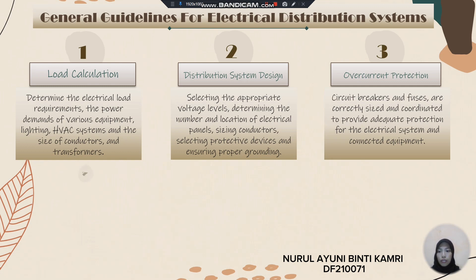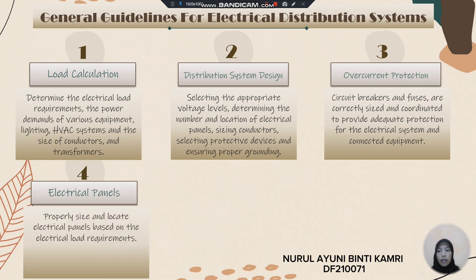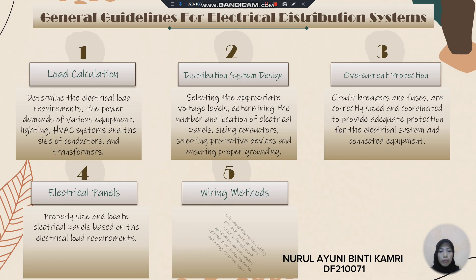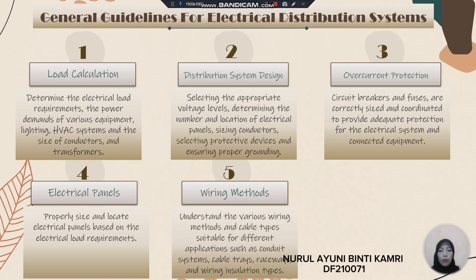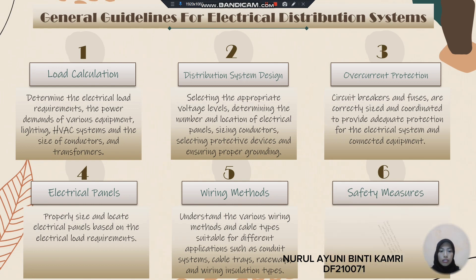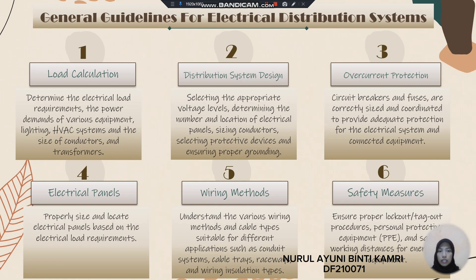The electrical panel must be properly sized and located based on the electrical load requirement. Fifth is the wiring method: this involves understanding various wiring methods and cable types suitable for different applications, such as conduit systems, cable tray, raceway, and wiring insulation types. Lastly is safety measurement, which ensures proper lockout and tagout procedures, personal protective equipment (PPE), and safe working distances for energized equipment.